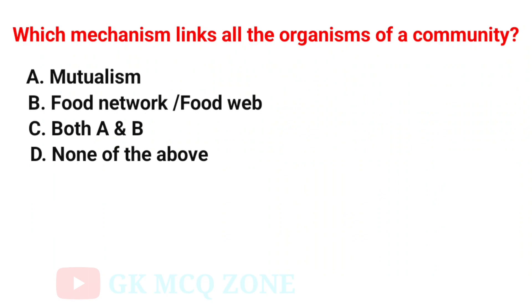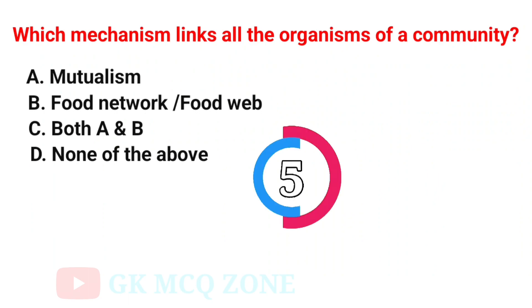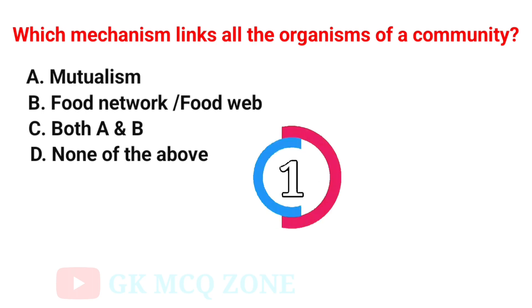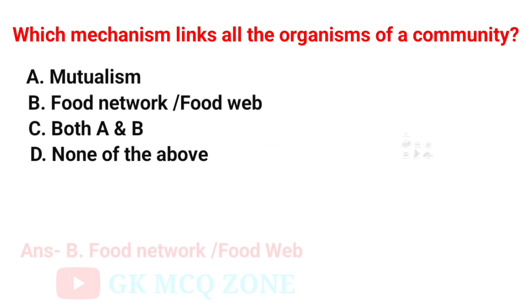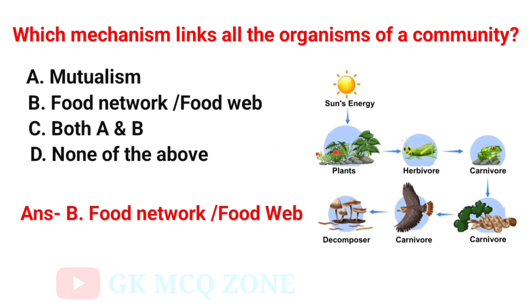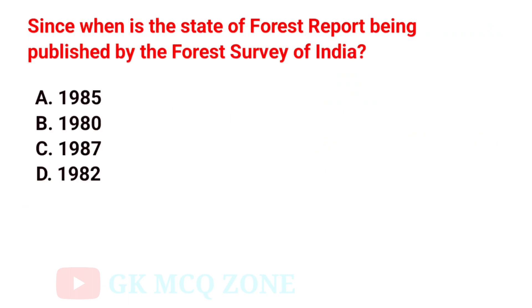Which mechanism links all the organisms of a community? The correct answer is Option B: Food Network, or Food Web.